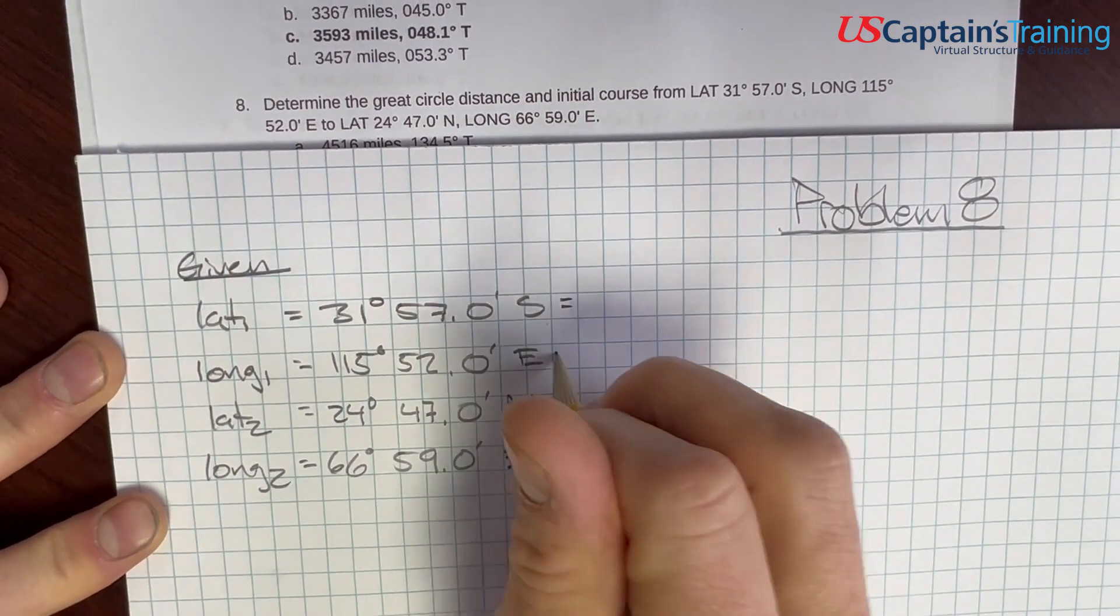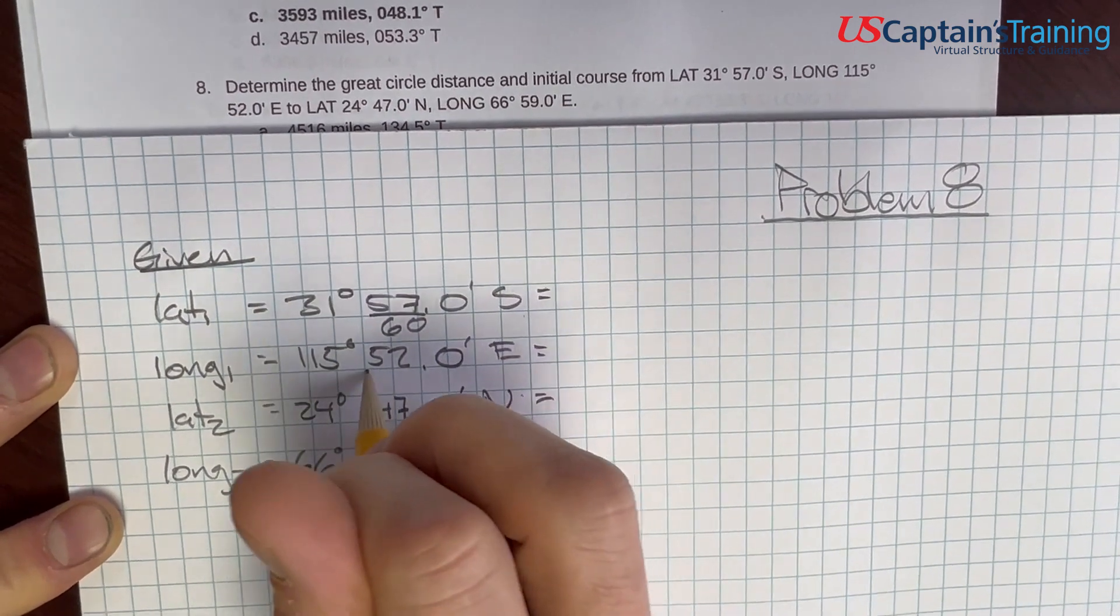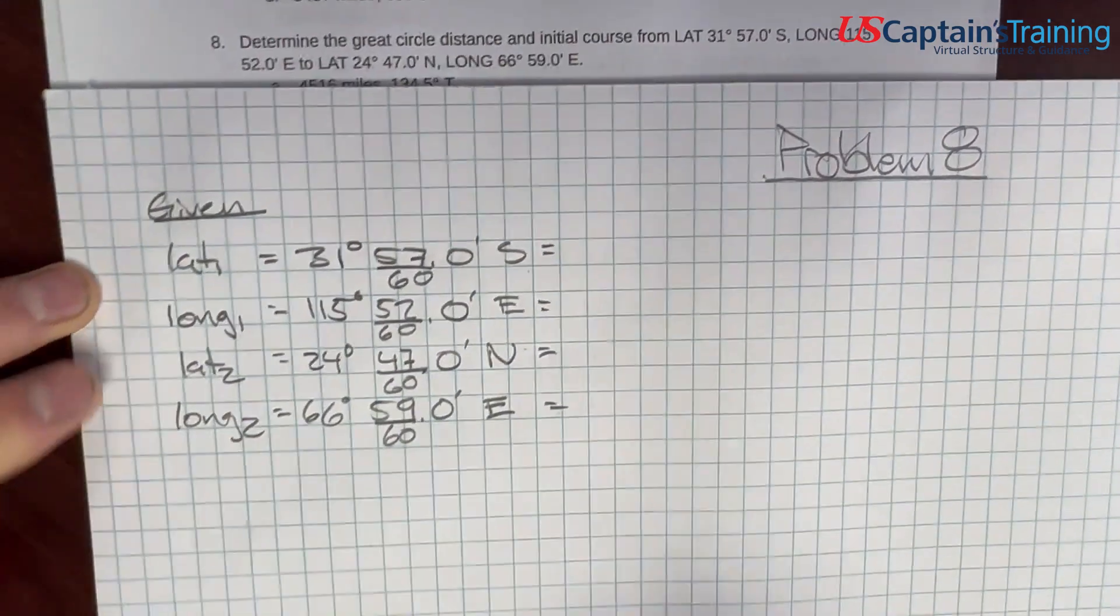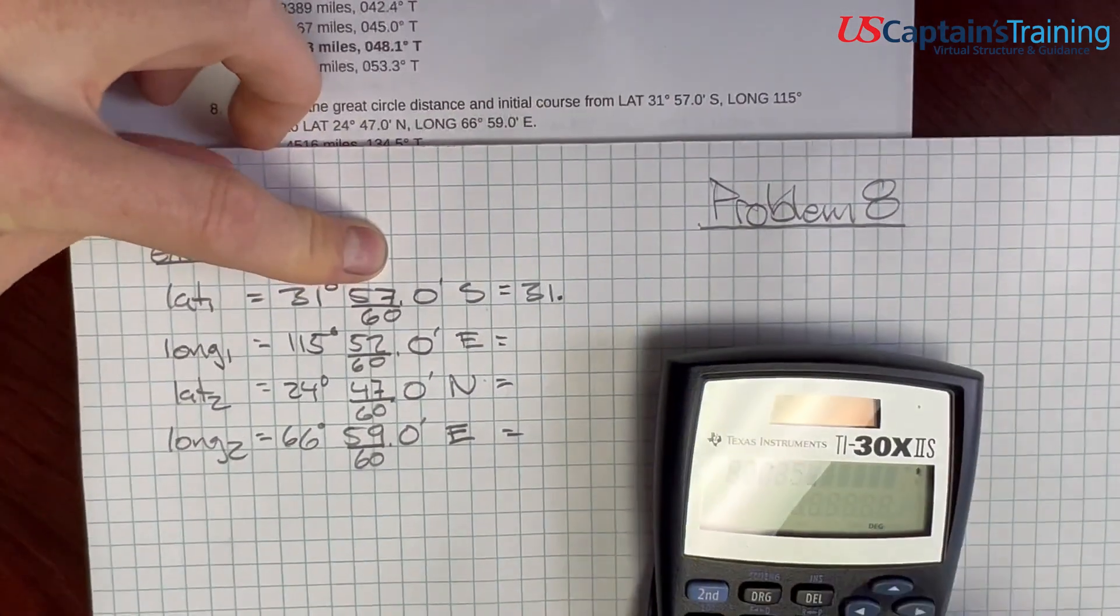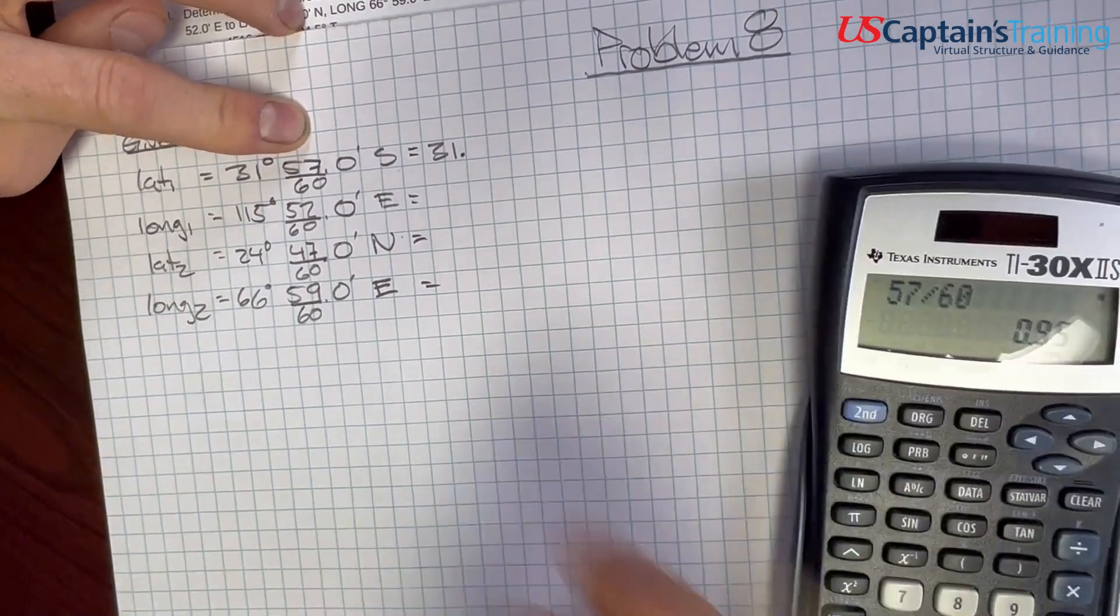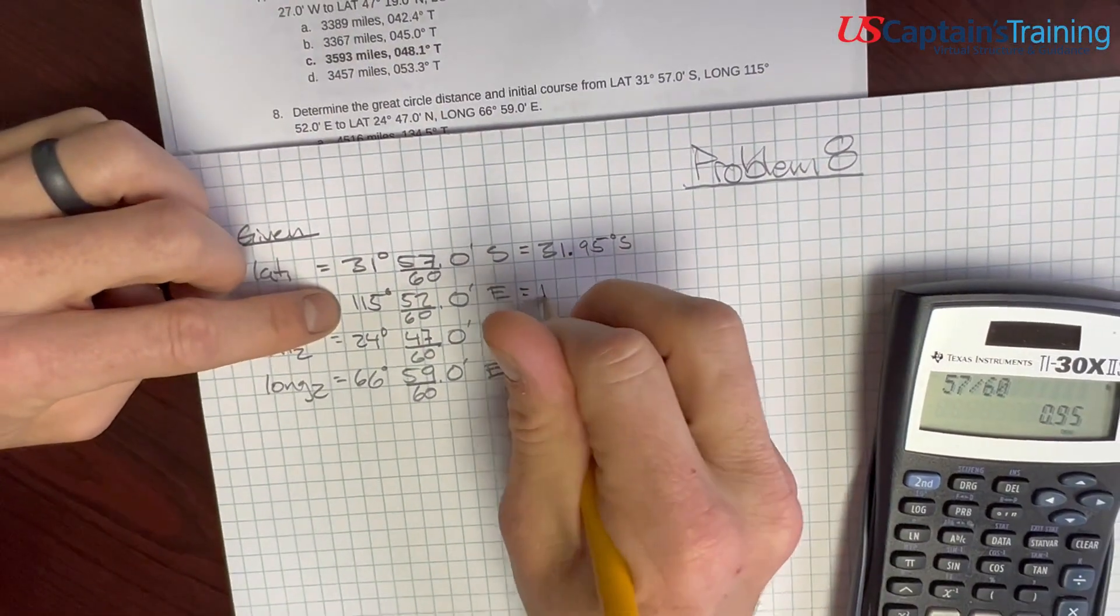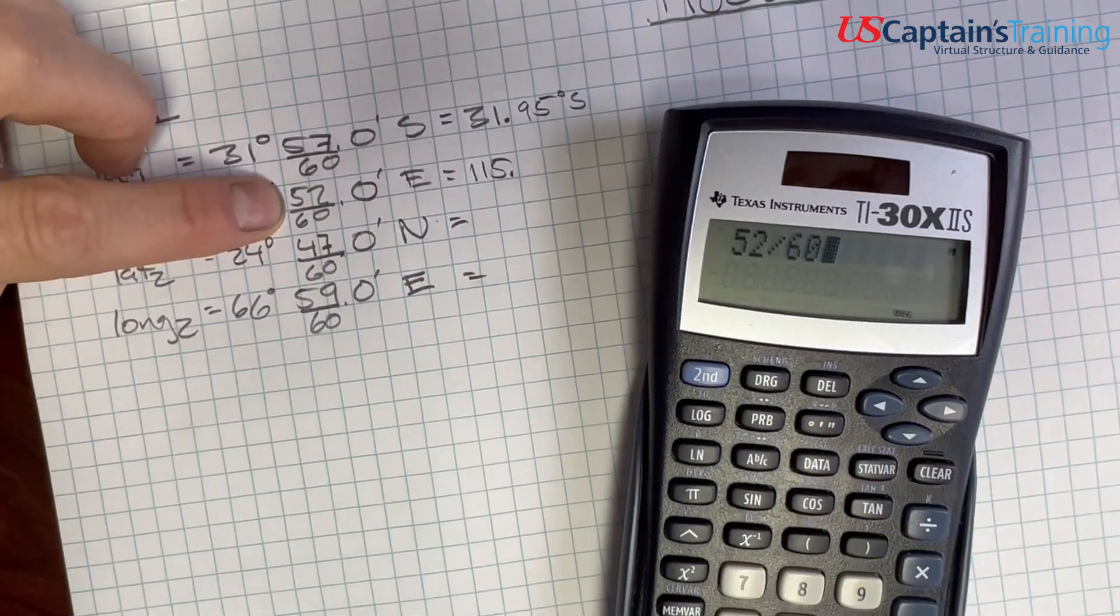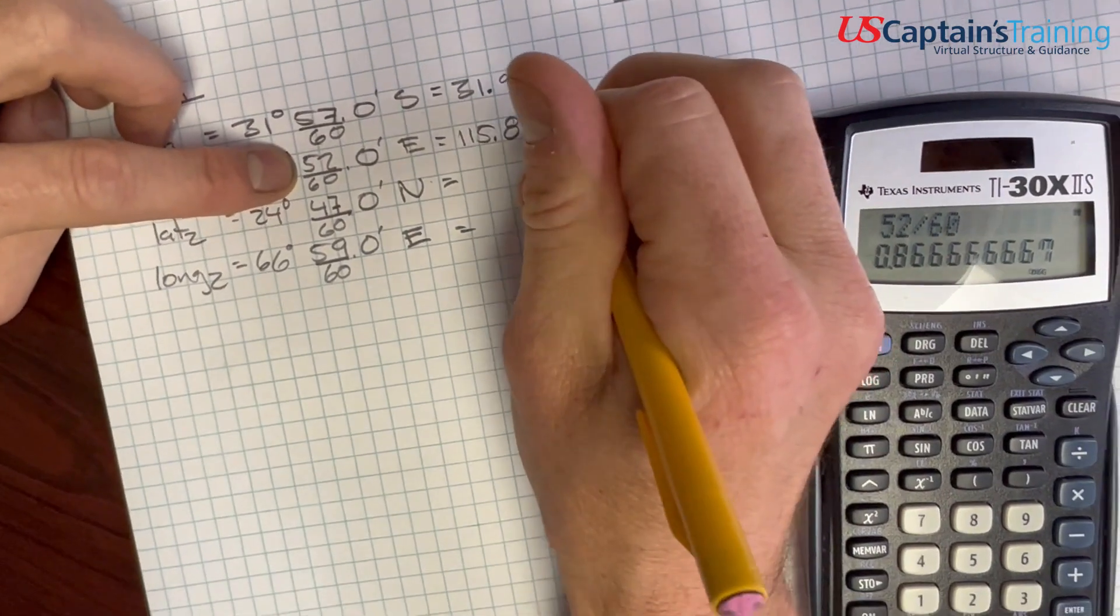All right, what's going to happen here is all of these need to get into only degrees. So, to get into degrees, you divide the minutes by 60. So, we're going to do all these. The whole number 31 point, and then put the decimal after here. 57 divided by 60 equals 95, so 31.95 degrees south. And this one is 115 point, 52 divided by 60 equals 0.87, 115.87 degrees east.